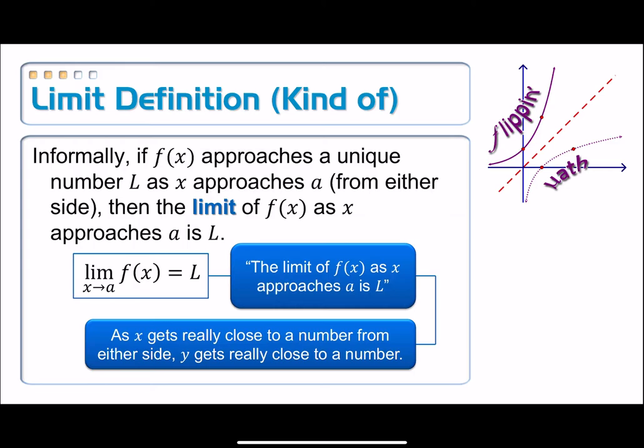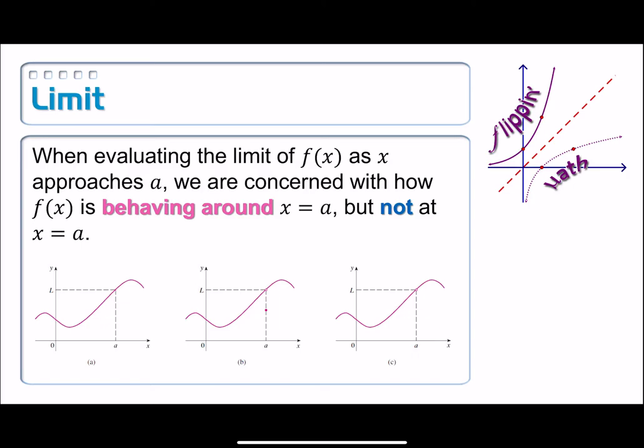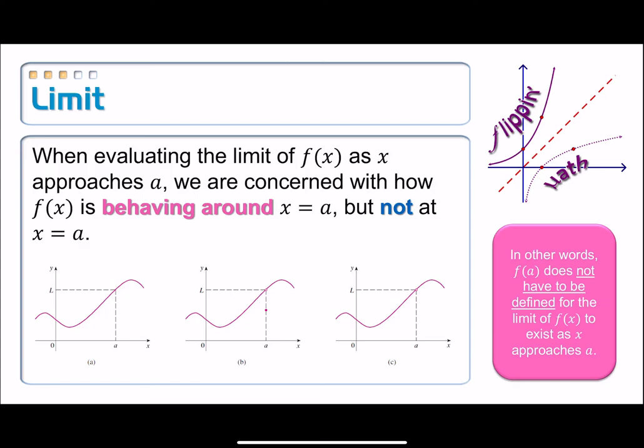If you wanted to know what the function value is equal to, that's just good old algebra 1. You plug it in and you work it out and you get it. But it's those instances when it's not defined, we want to know what is the graph doing around that point. When evaluating the limit of f of x as x approaches A, we are concerned about how f of x is behaving around x equals A, but not necessarily at x equals A. In other words, it could be completely undefined at that point. That doesn't matter. Your function does not have to be defined at that point in order for the limit to exist.